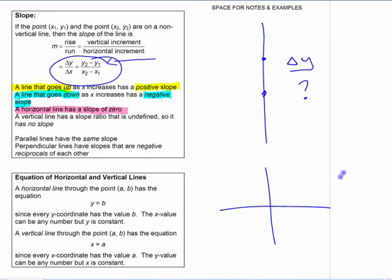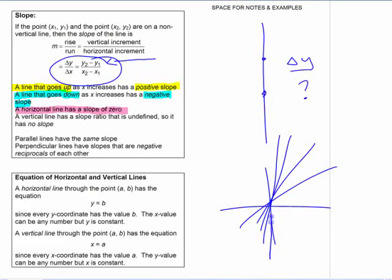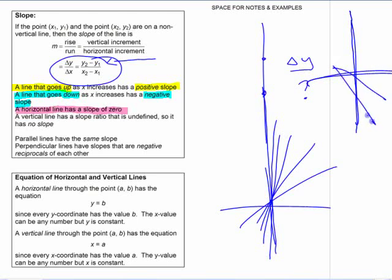If you take a line and start making it steeper and steeper, what's happening to the slope here? It's increasing. So by that logic, the steeper you make it, the higher it's getting. So if I take this to the extreme and make it vertical, what should its slope be? It should be infinity, right?